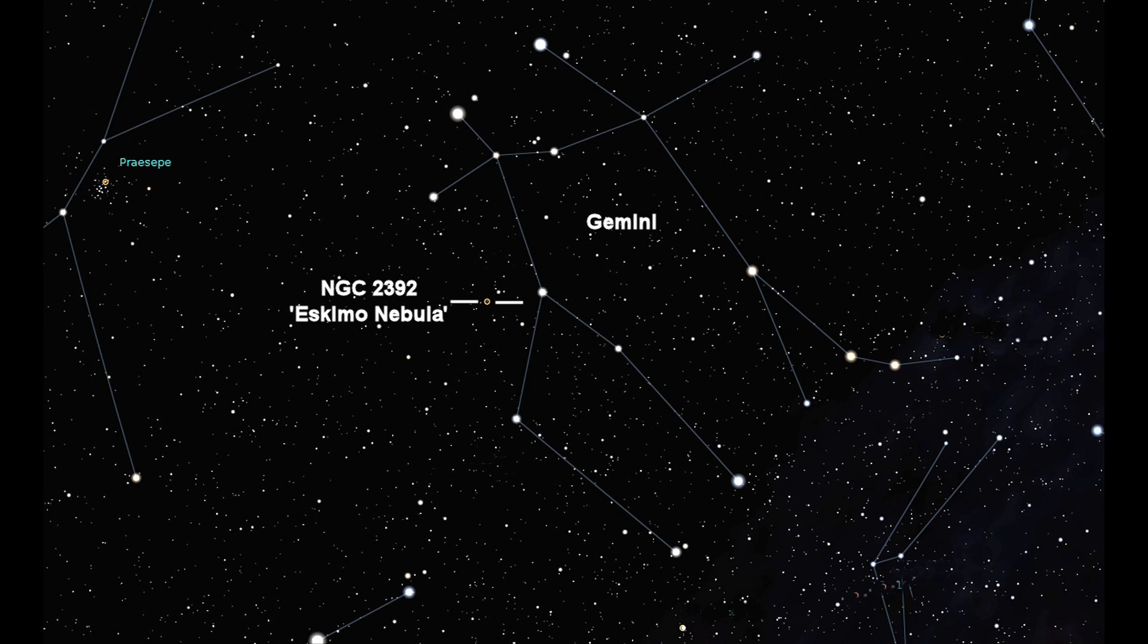But now we're going to something where you would need a high power eyepiece and maybe a filter will help. What we're going searching for now is to the right of Praesepe, it is in fact in the constellation Gemini. And this is known as the Eskimo Nebula. And I've marked it there on the picture.